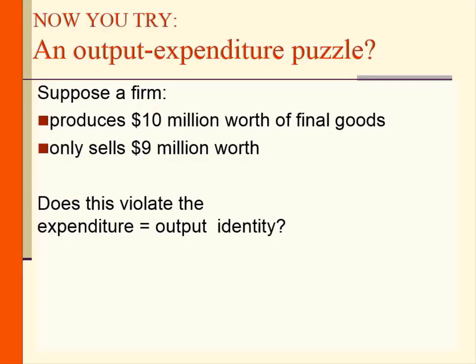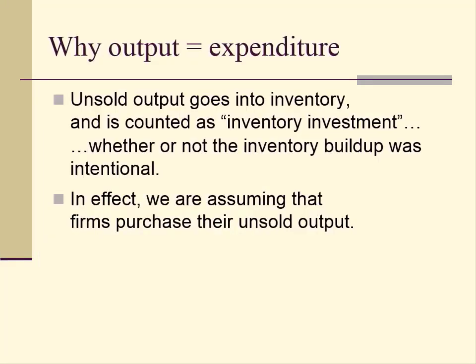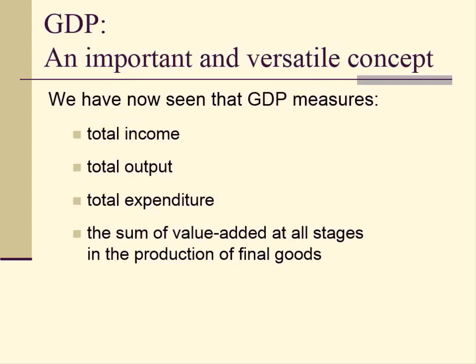Suppose a firm produces $10 million worth of final goods but only sells $9 million worth. Does this violate the expenditure-equals-output identity? The answer is no, because unsold output goes into inventory and is counted as inventory investment, whether or not the buildup was intentional. In effect, we assume firms purchase their unsold output. Therefore, output equals expenditure. GDP measures total income, total output, and total expenditure, and is the sum of value added at all stages of production.